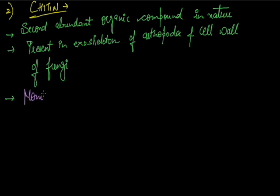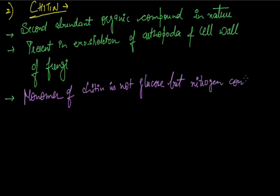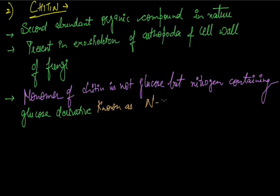Monomer of chitin is not glucose but a nitrogen containing glucose derivative known as N-acetyl glucosamine.